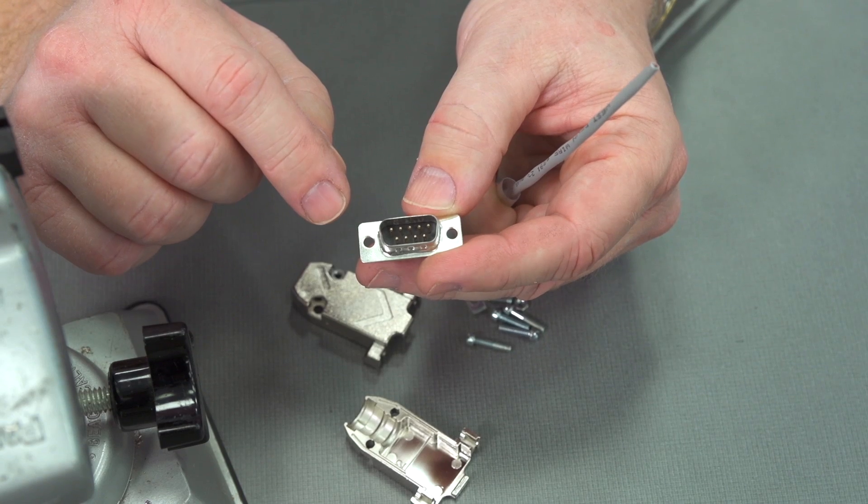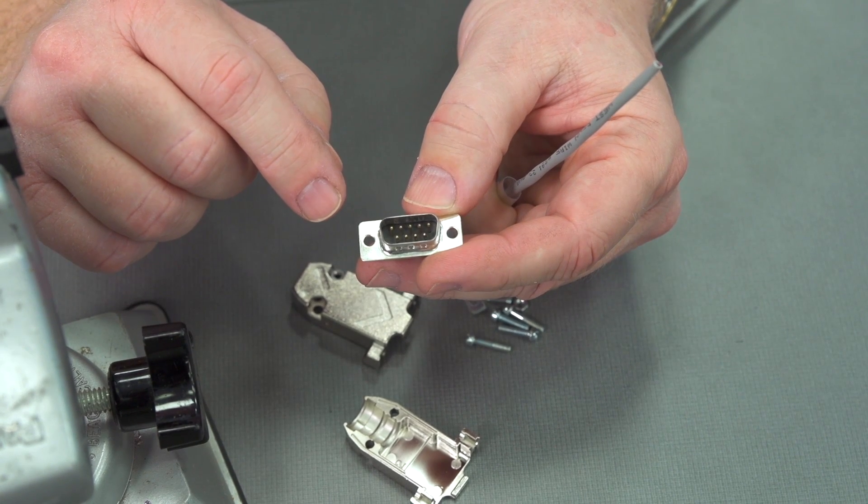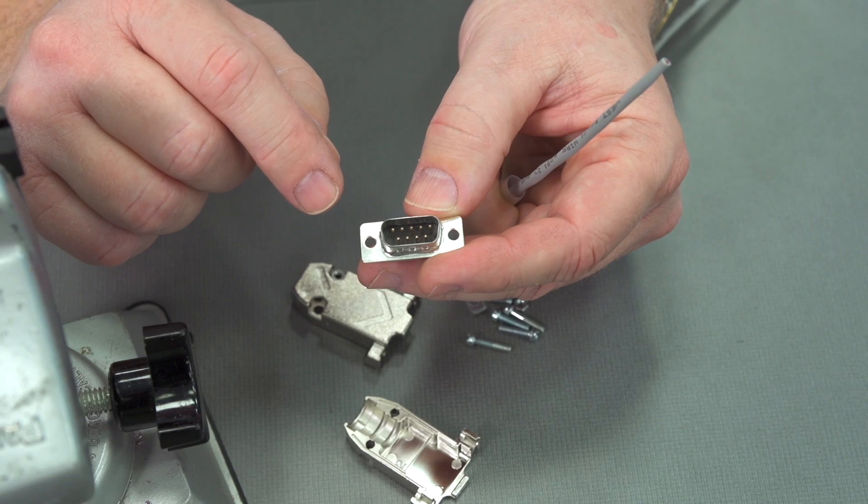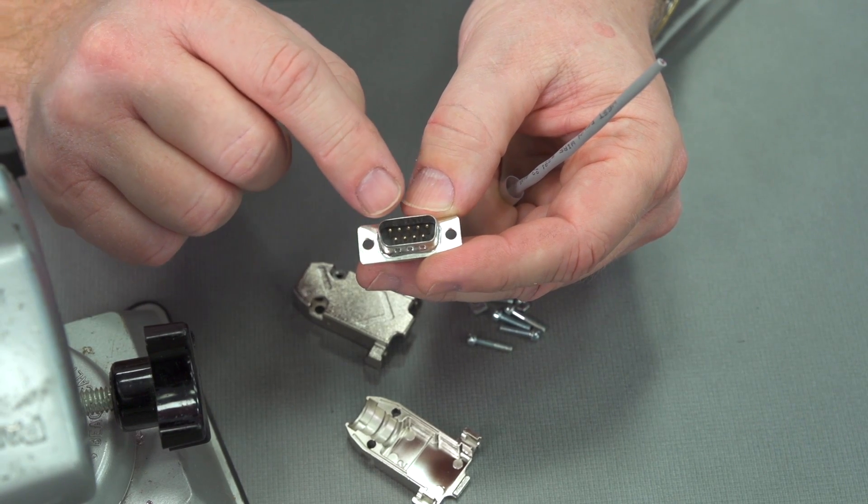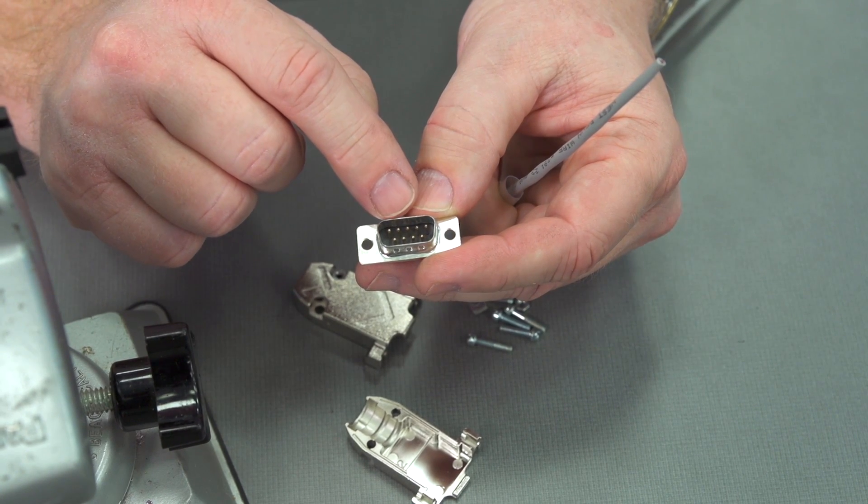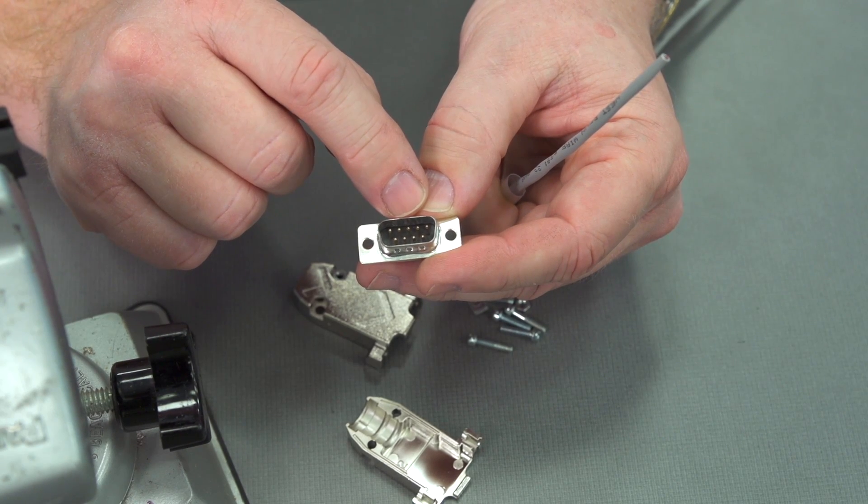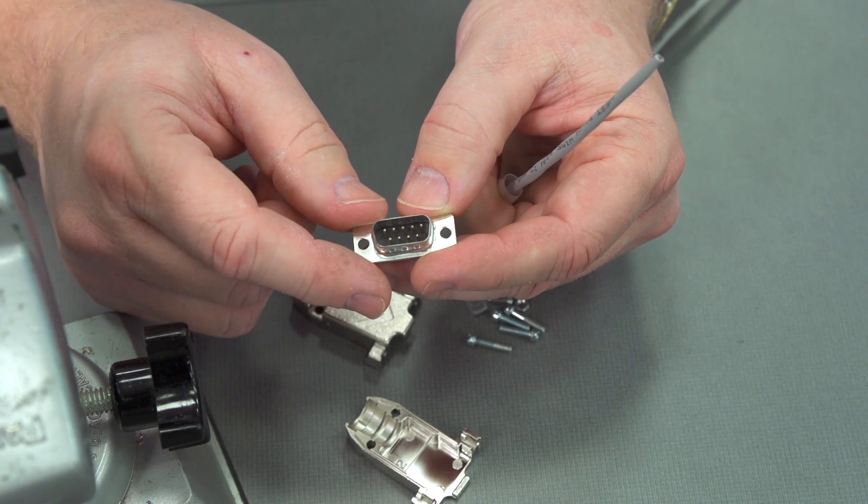When we're doing something like RS-232, we're typically soldering or crimping or connecting to pins 2, 3, and 5. Pin 2 is going to be transmit, pin 3 is going to be receive, and pin 5 is going to be the common shield connection.